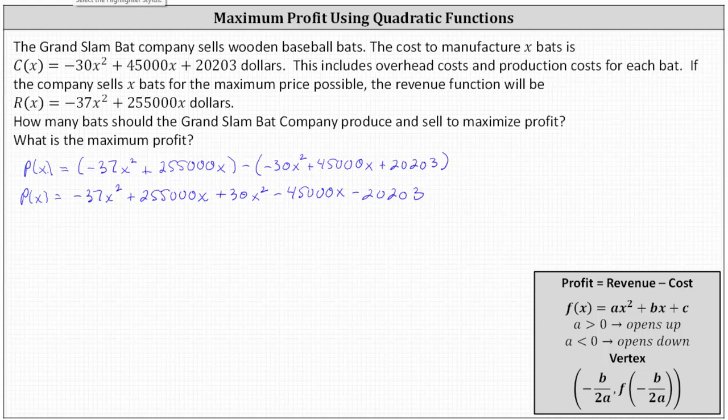And now we need to combine like terms. Notice how we have two X squared terms and we also have two X terms. Simplifying, we have P of X equals negative 37 X squared plus 30 X squared simplifies to negative 7 X squared. And then 255,000 X minus 45,000 X simplifies to plus 210,000 X. And then we still have minus 20,203. So this is our profit function.